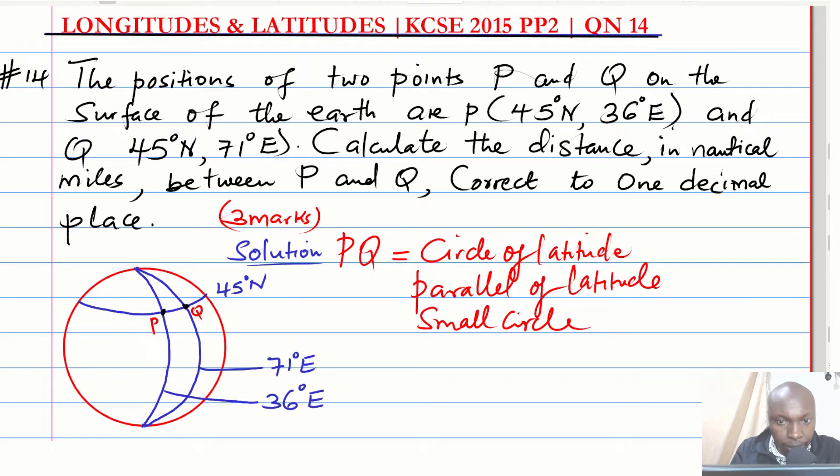We are required to get that distance in nautical miles, correct to one decimal place. Since we have identified that this distance is along the circle of latitude, how do we get the distance along the parallel of latitude in nautical miles? That distance is given by this formula, which is very important.